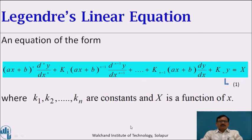First we will see what is Legendre's Linear Equation. An equation of the form (ax + b)^n · d^n y/dx^n + k₁(ax + b)^(n-1) · d^(n-1)y/dx^(n-1) + ... + k_{n-1}(ax + b) dy/dx + k_n y = X, where k₁, k₂, ..., k_n are constants and X is a function of x.